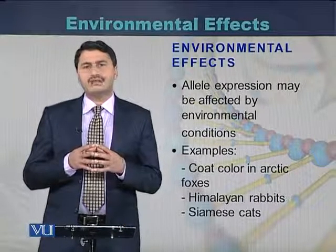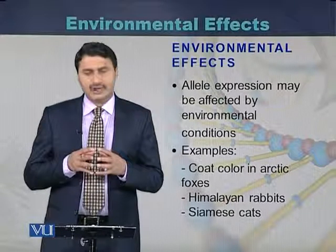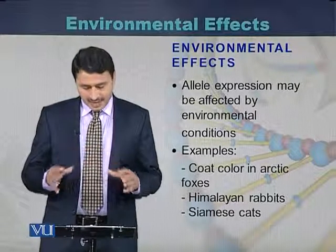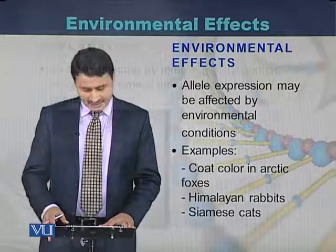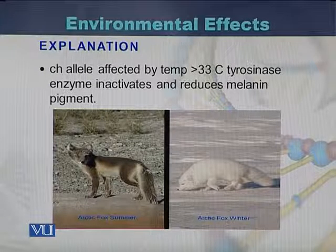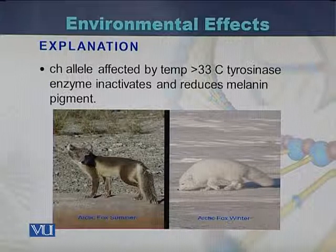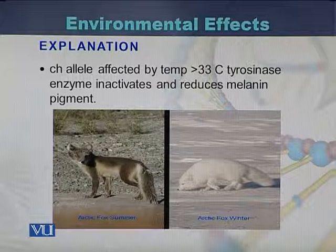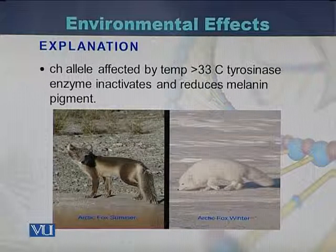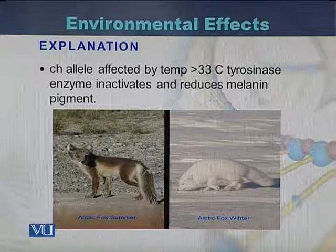The best examples of environmental effects are the coat color in arctic foxes, Himalayan rabbits, and Siamese cats. In the arctic fox, the environment affects the fur color: if the temperature is more than 30°C, the color of the fox changes to brown, but if the temperature is less than 33°C during winter, the color of the arctic fox is white. This shows a strong impact of environment on fur color.